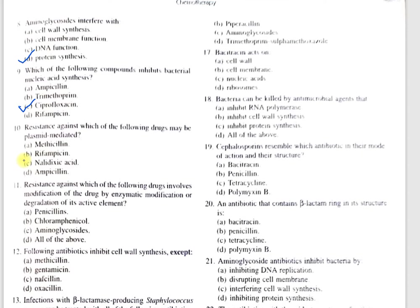Question number 10: Resistance against which of the following drugs may be plasmid mediated? A, methicillin; B, ampicillin; C, nalidixic acid; D, ampicillin. The correct option is B, ampicillin. The genes for ampicillin resistance are carried by plasmids, which can be transferred from one bacterial cell to another bacterial cell.